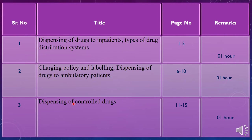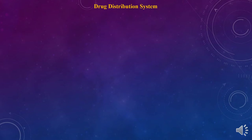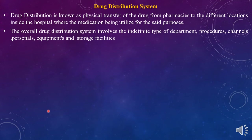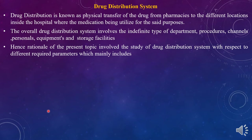Before moving to the actual discussion, we need to cover the introductory part of the drug distribution system. The drug distribution system is defined as the physical transfer of a drug from pharmacies to different locations inside the hospital where medication is utilized. The overall drug distribution system involves different types of departments, procedures, personnel, equipment, and storage facilities.